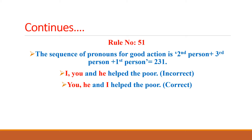Let's look at example one: 'I, you and he helped the poor.' Helping the poor is a good action, so we follow rule 231. The rule says first place second person — that is 'you'; then third person — that is 'he'; and finally first person — that is 'I'. So 'I, you and he helped the poor' is the incorrect expression, whereas 'you, he and I helped the poor' is the correct expression.